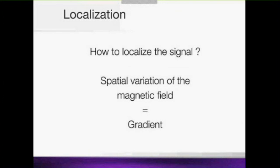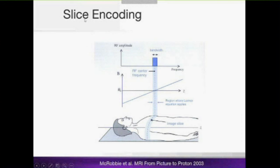We still have a problem: we have understood how to create an echo and receive it in the coil, but the coil receives signal from the whole head at once. How do we localize the signal — how do we know it comes from the tip of the nose rather than the middle of the ventricles? For this we use a gradient, which is a deliberate spatial variation in the magnetic field. There are three types of gradient: the slice-encoding gradient, the frequency-encoding gradient, and the phase-encoding gradient.